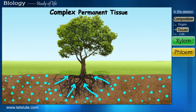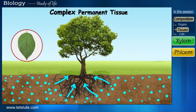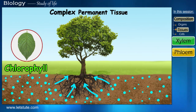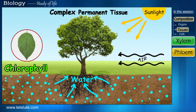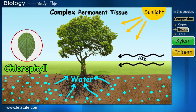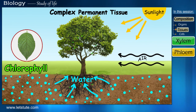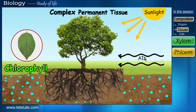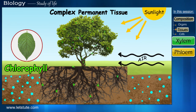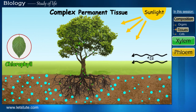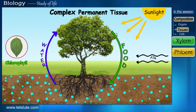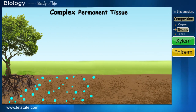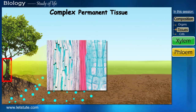Besides water, the plant also requires food to survive. The green leaves make food using chlorophyll, sunlight, air, and water through photosynthesis. All the food made in the leaves has to reach all parts of the plant, including the root cells, as roots need energy to absorb water from the ground. So you see, it is like a cycle that continuously keeps occurring in a plant — water goes up, food comes down.